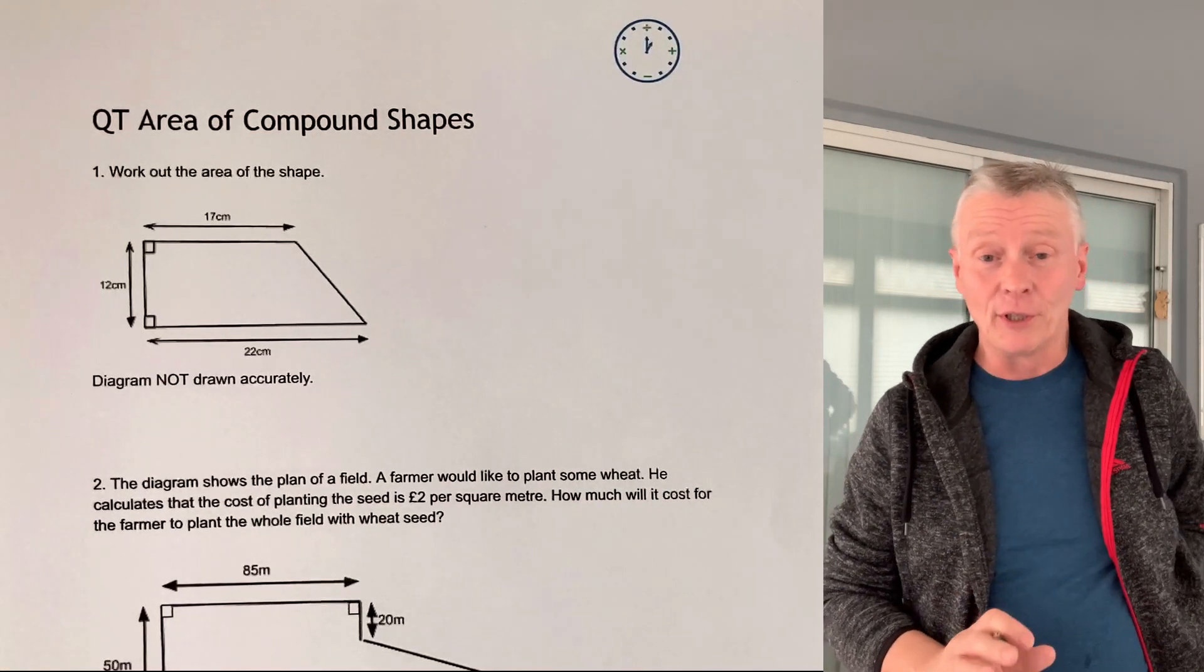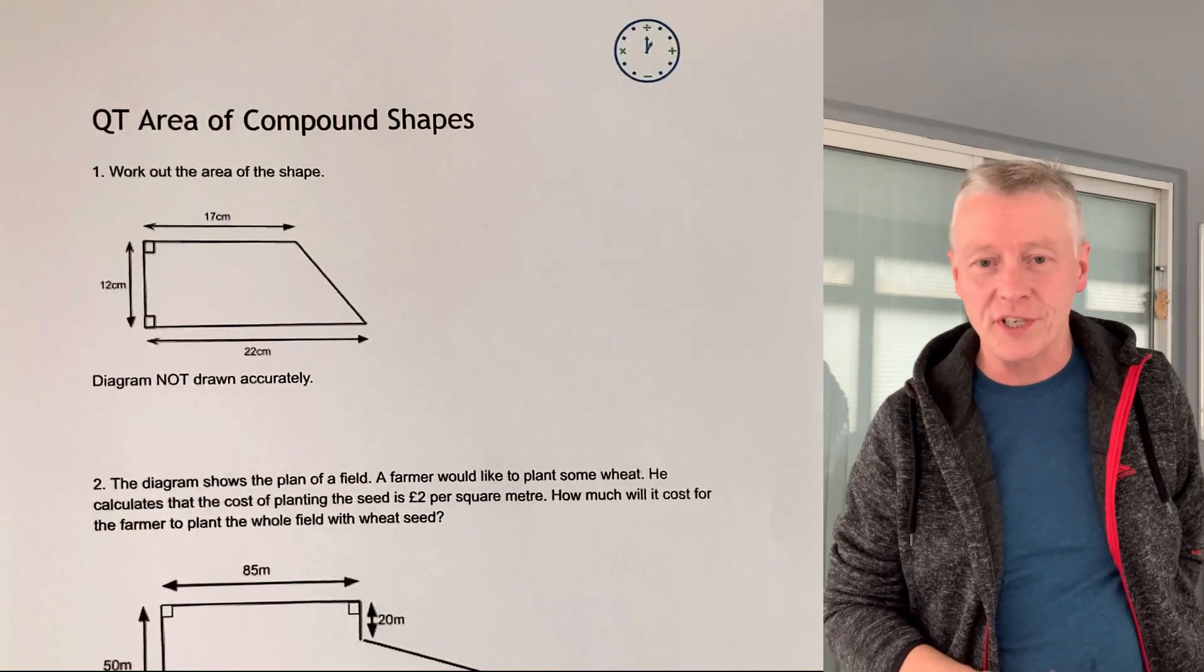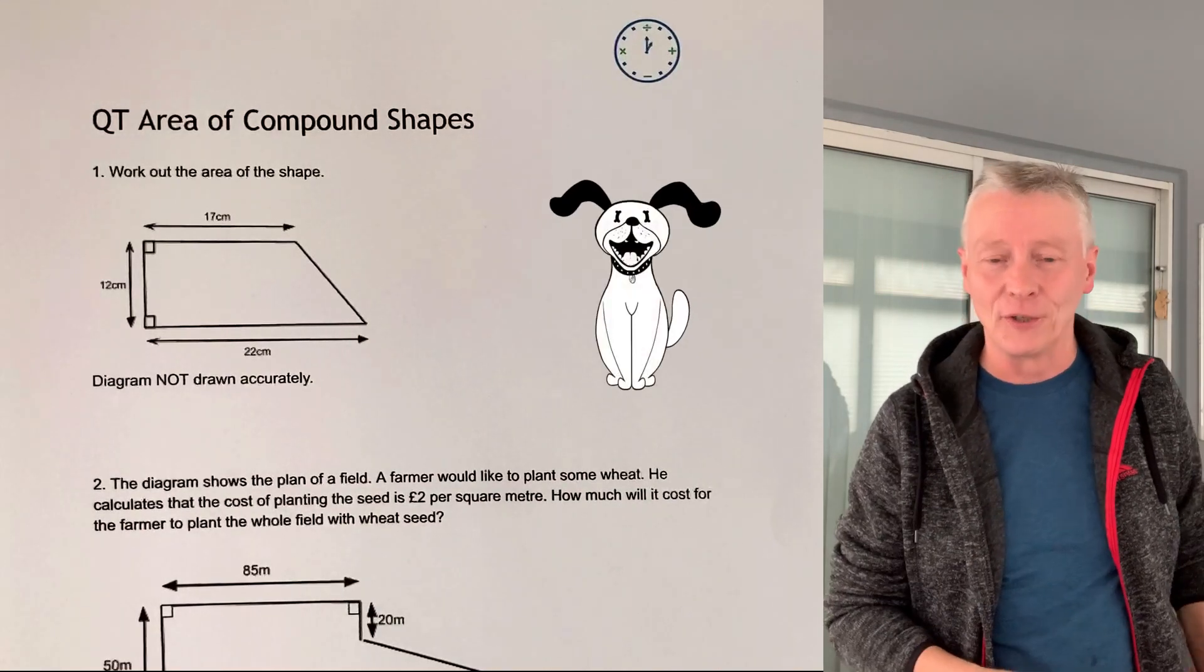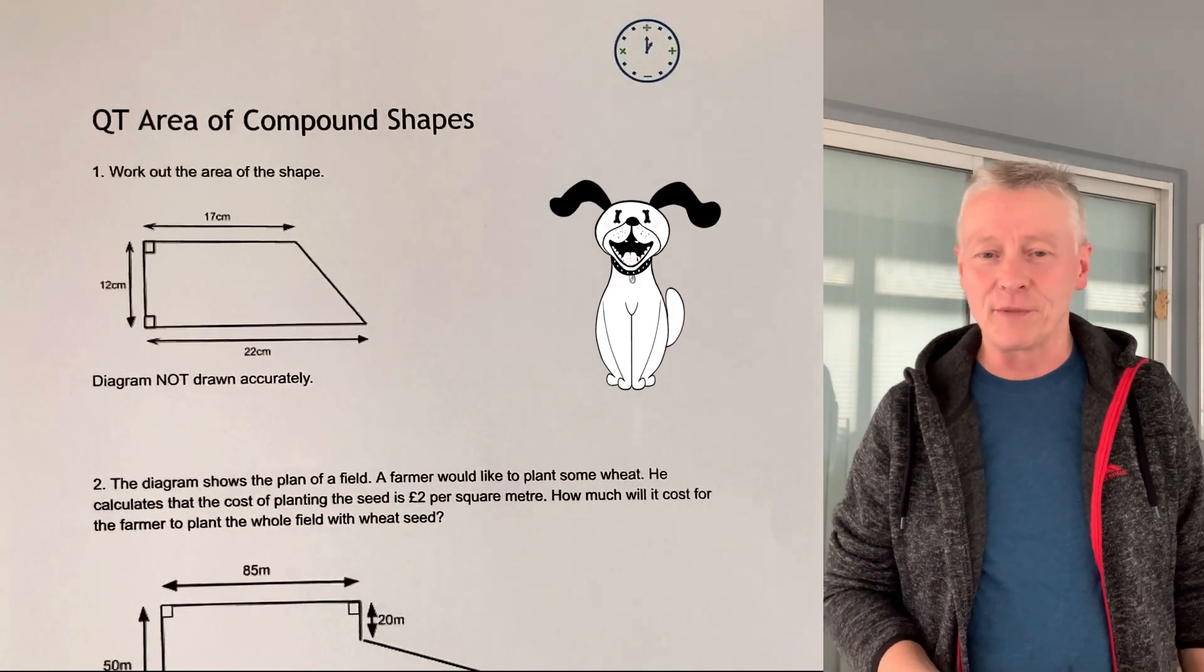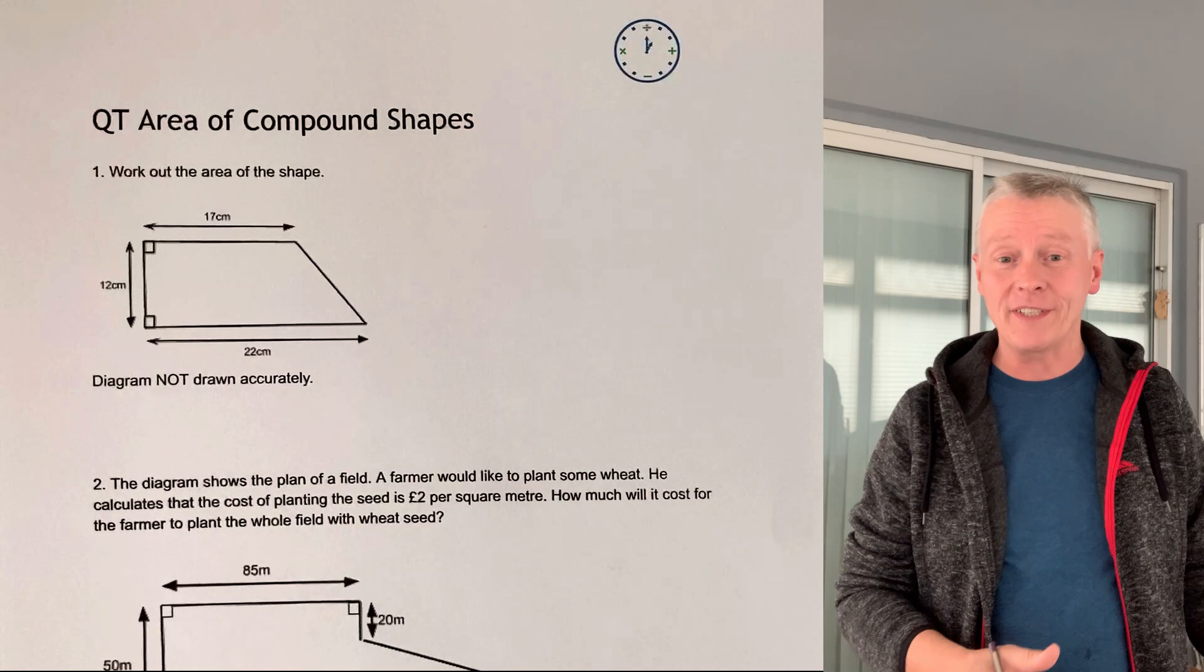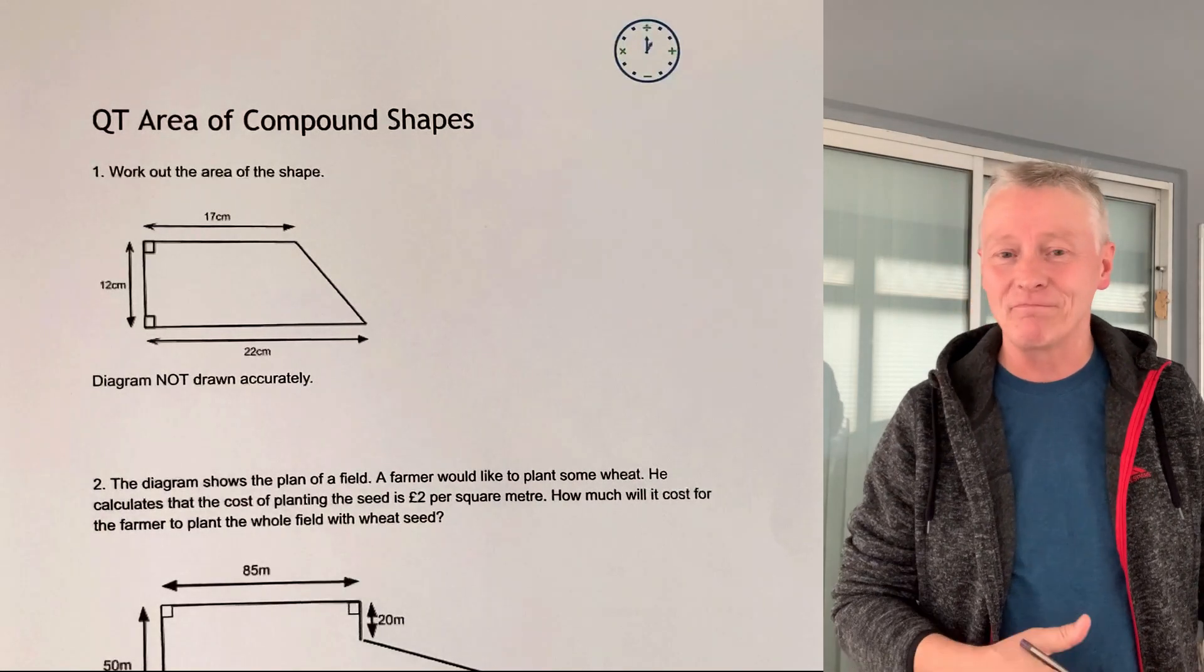This three-minute video is only going to be looking at question number two, which deals with a farmer's field. In this farmer's field, we're going to work out the area and then multiply it by two pounds to find the cost of planting some wheat seed.